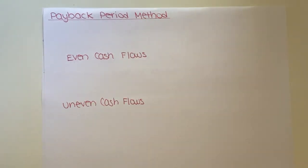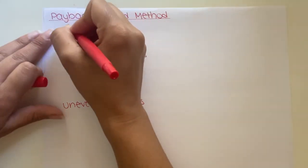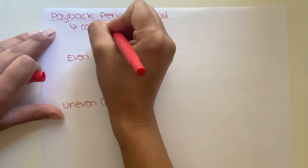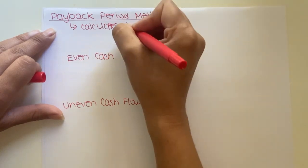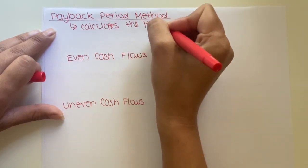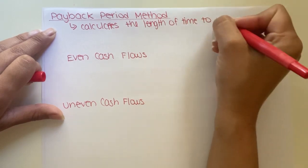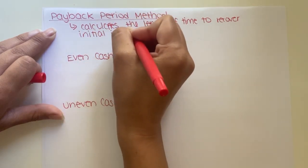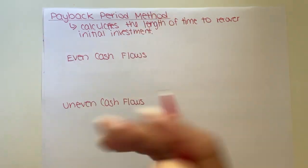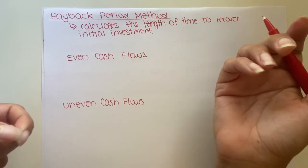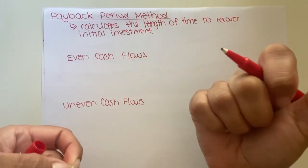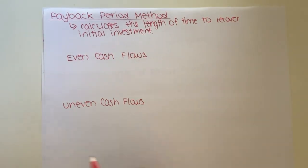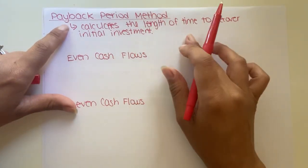The payback period method calculates the length of time to recover the initial investment. So if a particular capital asset costs $25,000, it tells us how many years before we get that $25,000 back — before it pays for itself based on the extra revenue it brings in or its decreased operating costs.